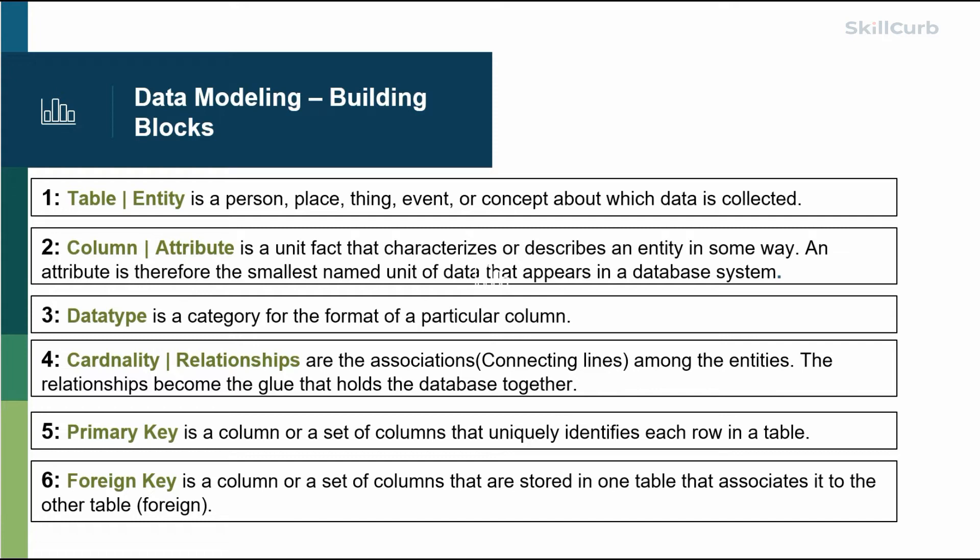phone number, address, etc. Third is data types. Each of those columns can have a certain type of data type. All it is, is that if it's a phone number, we have a number as a format of the column. If it's a name, then it's more of textual data, so just the different flavors of